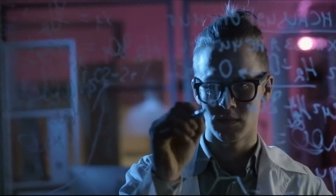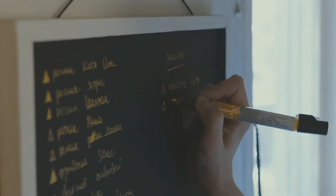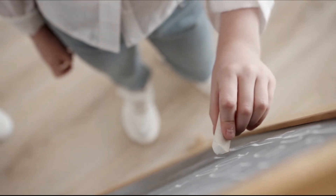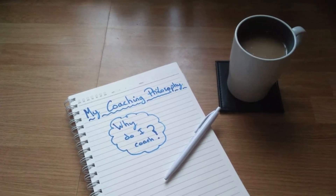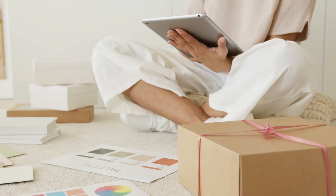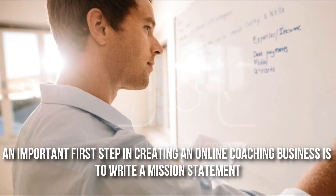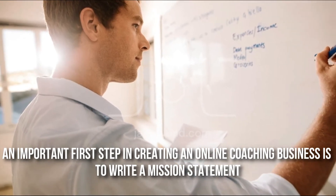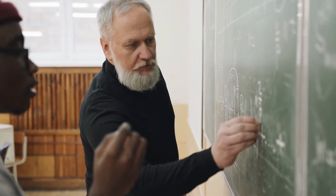Step 1: Determine Your Purpose. Your first step should be to pick what kind of coach you will be and formally determine your coaching philosophy. What are you best at? What are you most interested in? What help do many people need? If you write down several answers to each of these questions, one answer may appear in all three lists — this is what you should teach. An important first step in creating an online coaching business is to write a mission statement. It may seem strange to create a mission statement for a one-person company, but doing so will help you refine your intentions.